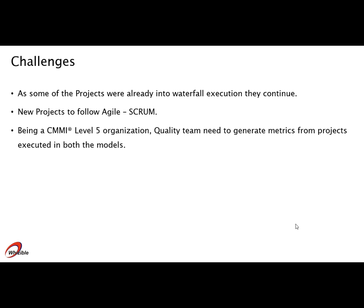New projects followed the Agile Scrum model. Being a CMMI level 5 organization, the quality team had to generate metrics from projects executed in both models at the same time.